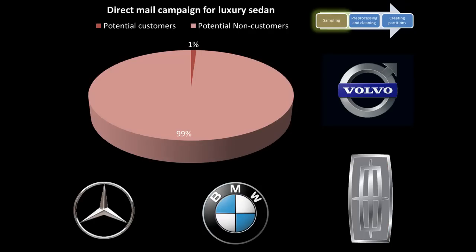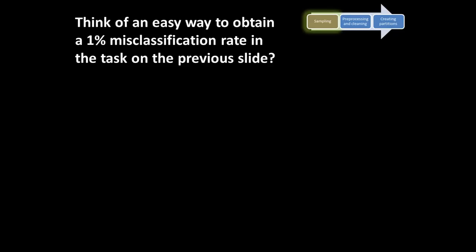Consider this: let's say we are talking about a direct mail campaign for a luxury sedan or a sports car. The very nature of this situation is such that 99% of the population are not potential customers — only 1% are going to be potential customers. So your success cases are only 1% of the total population. Given that, can we think of an easy way to obtain a very simple model that achieves only a 1% misclassification rate? What off-the-cuff technique can you think of to predict whether someone is going to be a buyer or non-buyer, making only 1% mistakes?